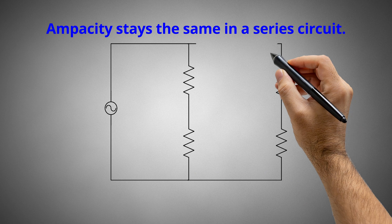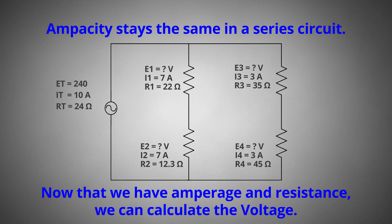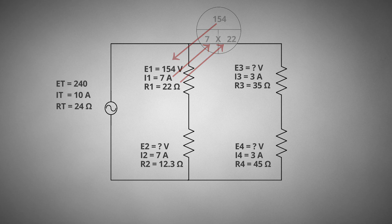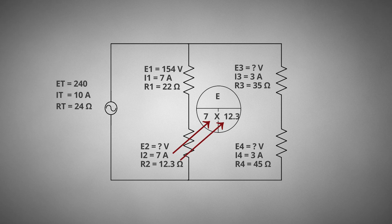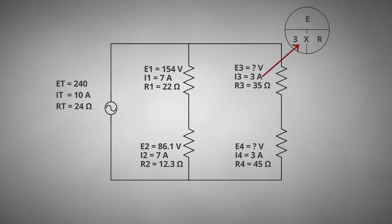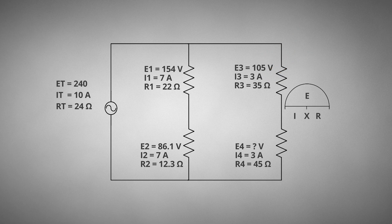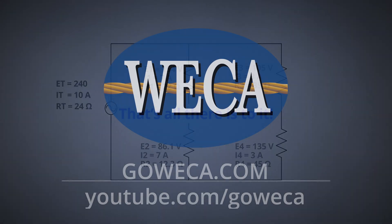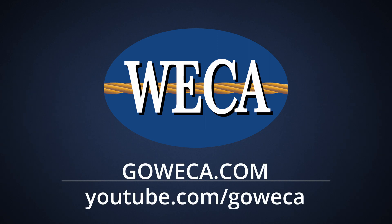Ampacity stays the same in a series circuit. Now that we have amperage and resistance, we can calculate the voltage using Ohm's Law. 7 amps times 22 ohms equals 154 volts; 7 amps times 12.3 ohms equals 86.1 volts; 3 amps times 35 ohms equals 105 volts; 3 amps times 45 ohms equals 135 volts. That's all there is to it. Thanks for viewing — look for more at our YouTube channel.